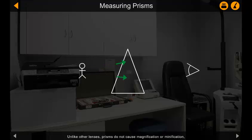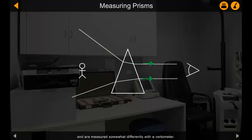Unlike other lenses, prisms do not cause magnification or minification and are measured somewhat differently with a vitometer.